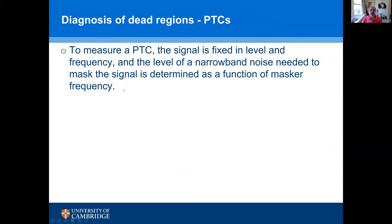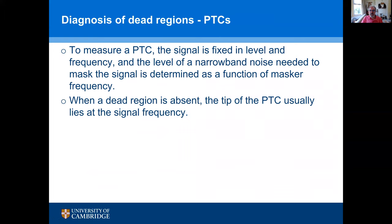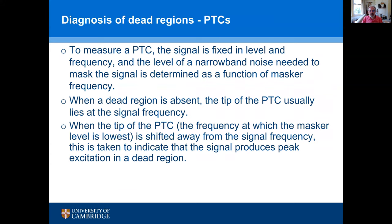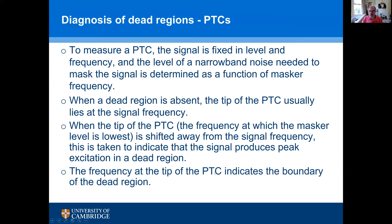One widely used test is the psychophysical tuning curve, or PTC. To measure a PTC, the signal is fixed in level and frequency, and the level of a narrow-band noise needed to mask the signal is determined as a function of the masker center frequency. When a dead region is absent, the tip of the PTC usually lies at the signal frequency. But when the tip — where the masker level is lowest — is shifted away from the signal frequency, this indicates the signal produces peak excitation in a dead region, and the frequency at the tip indicates the boundary of the dead region.